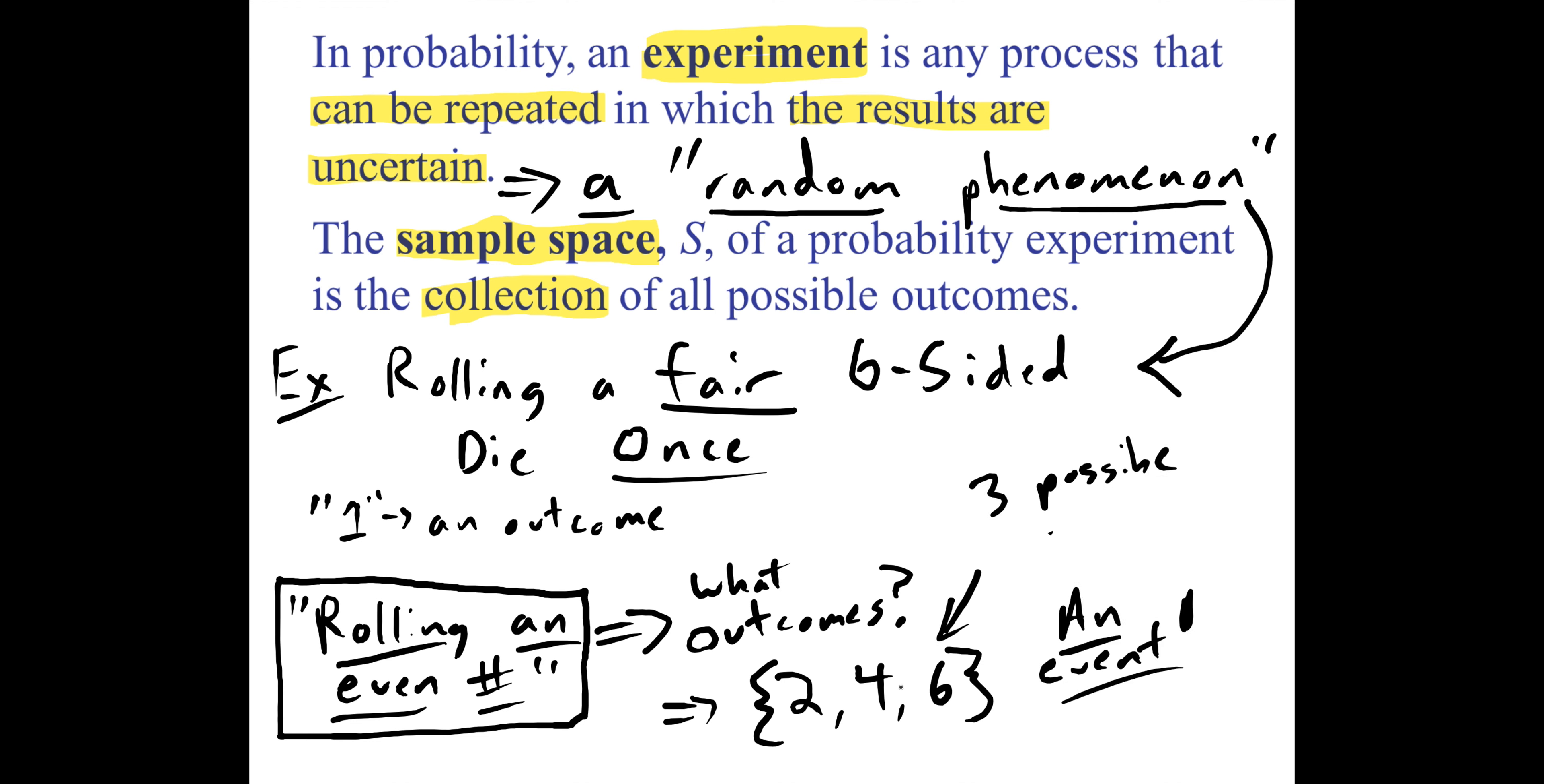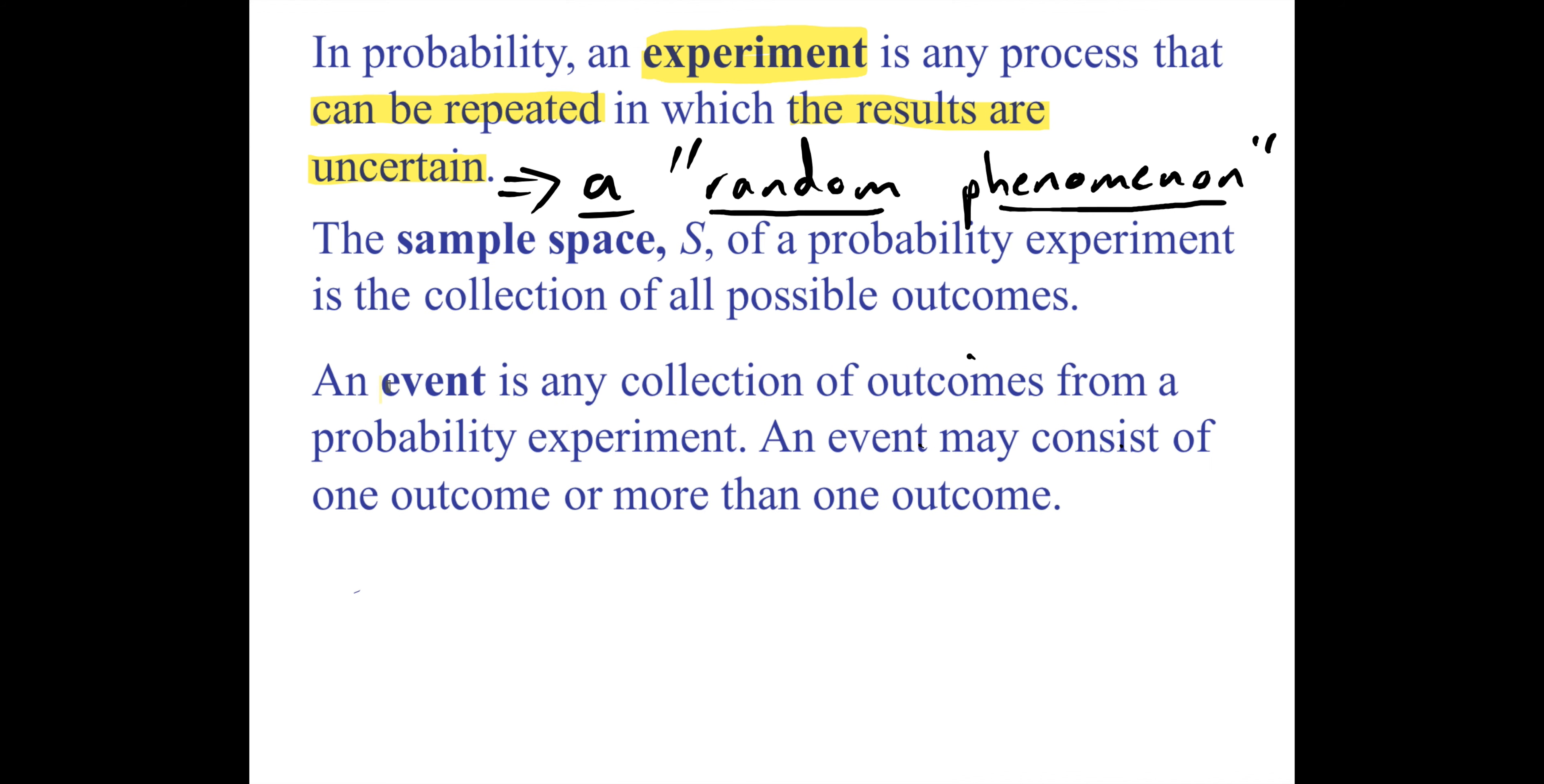The pieces of events are outcomes, so we could have events like rolling an odd number or rolling a number less than five. Here's the book's definition: an event is just a collection of outcomes from a probability experiment. We could have an event like rolling at least a four, and then the outcomes for that thing we could list as that collection. What are those? Four is at least four, and anything bigger is at least four, so there's three outcomes here.